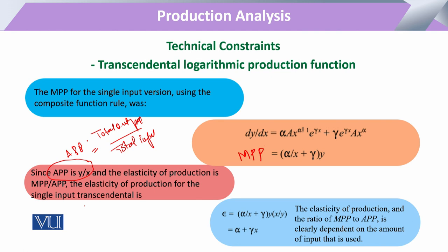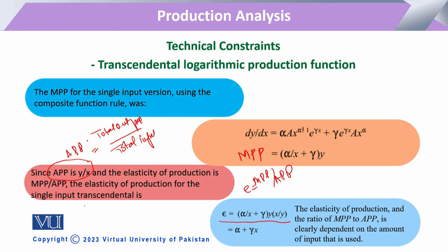The elasticity of production for the single input case is the ratio of marginal physical productivity divided by average physical productivity. When we calculate this elasticity of production, it depends only on the amount of that input which has been used. For the two-input case, the same steps apply, but now the contribution of two inputs is considered simultaneously.